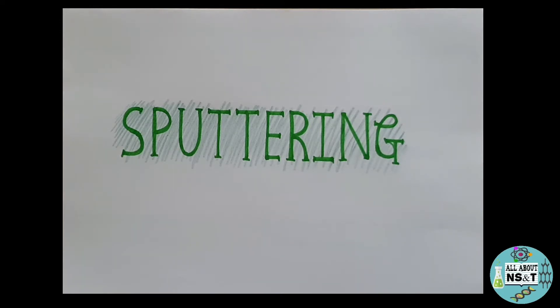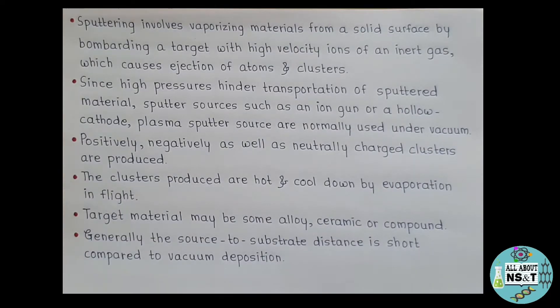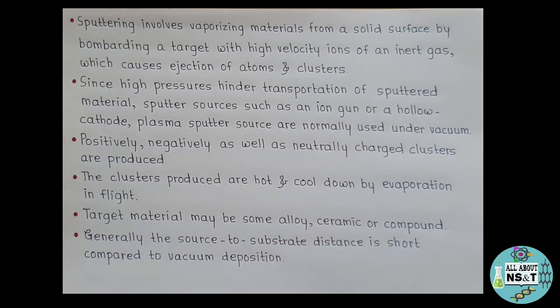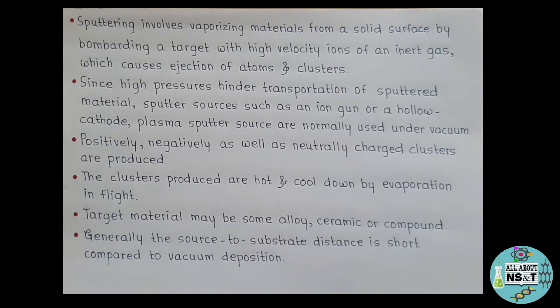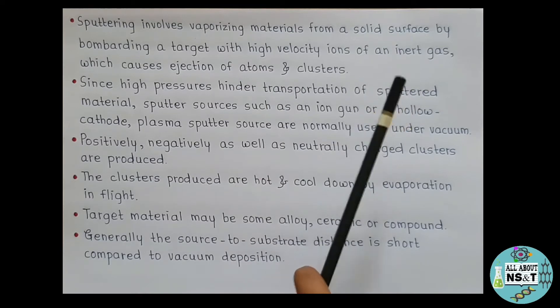It is widely used as a thin film deposition technique. Firstly, let's look at its definition. Sputtering involves vaporizing materials from a solid surface by bombarding a target with high velocity ions of an inert gas which causes ejection of atoms and clusters. Now let's understand its definition. So what happens during sputtering is vaporization of materials from a solid surface, and how we achieve this is by hitting high energy ions on the target which in turn causes ejection or removal of atoms, surface atoms and clusters which are then deposited on the substrates.